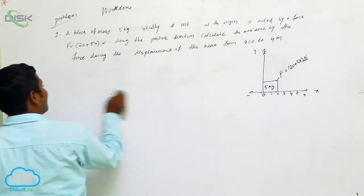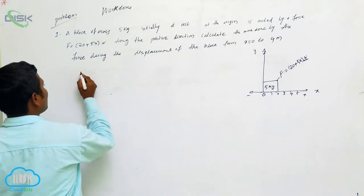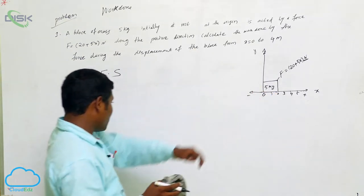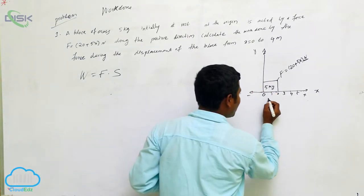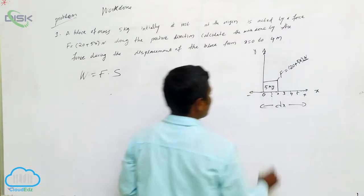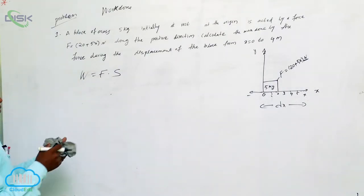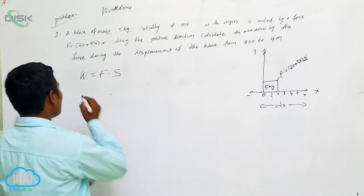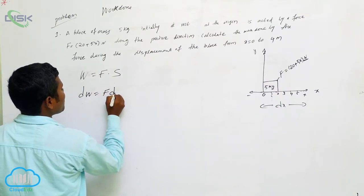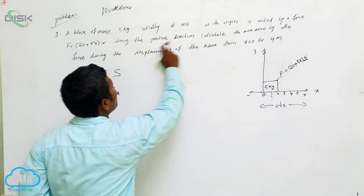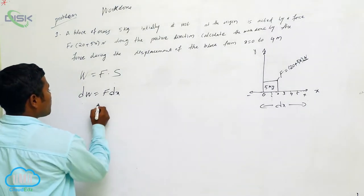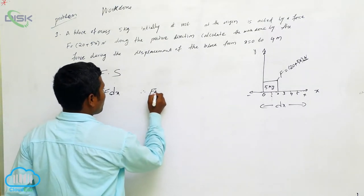Now we have to calculate the work done. The formula is W = force × displacement. However, since we consider a small distance at a certain point, we write the elemental work done as dW = F · dx, because the block is moving in the positive x-direction.